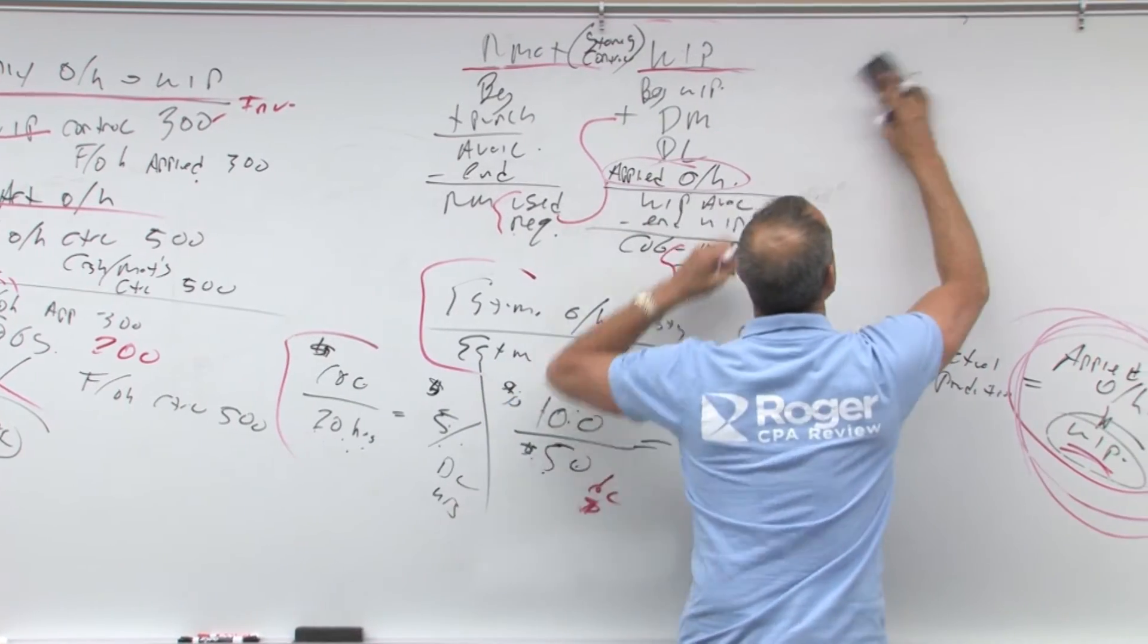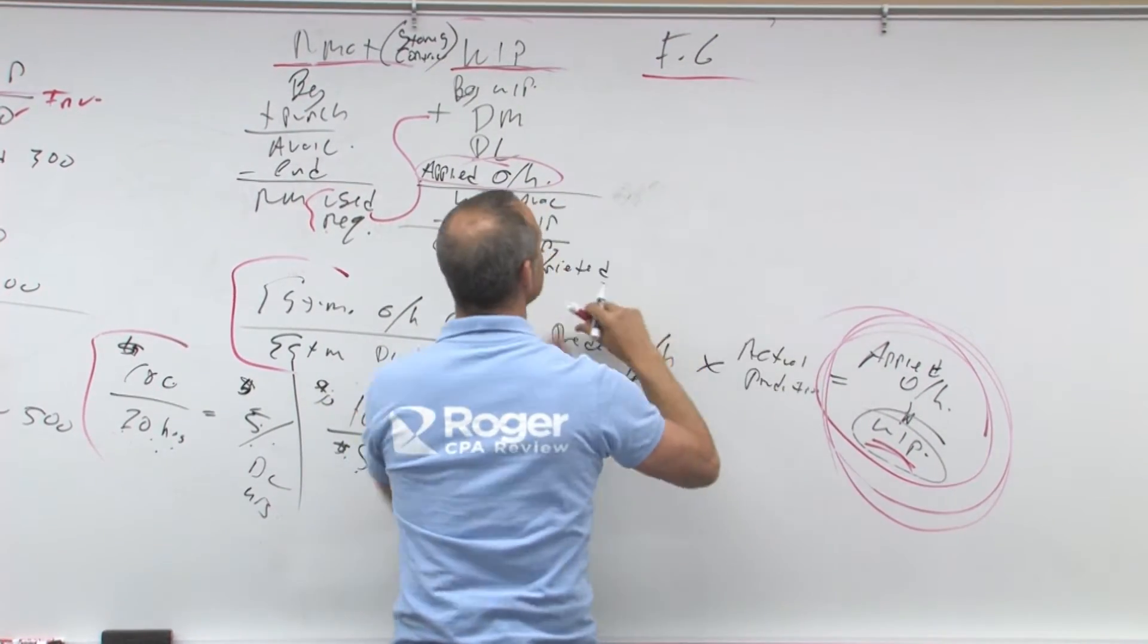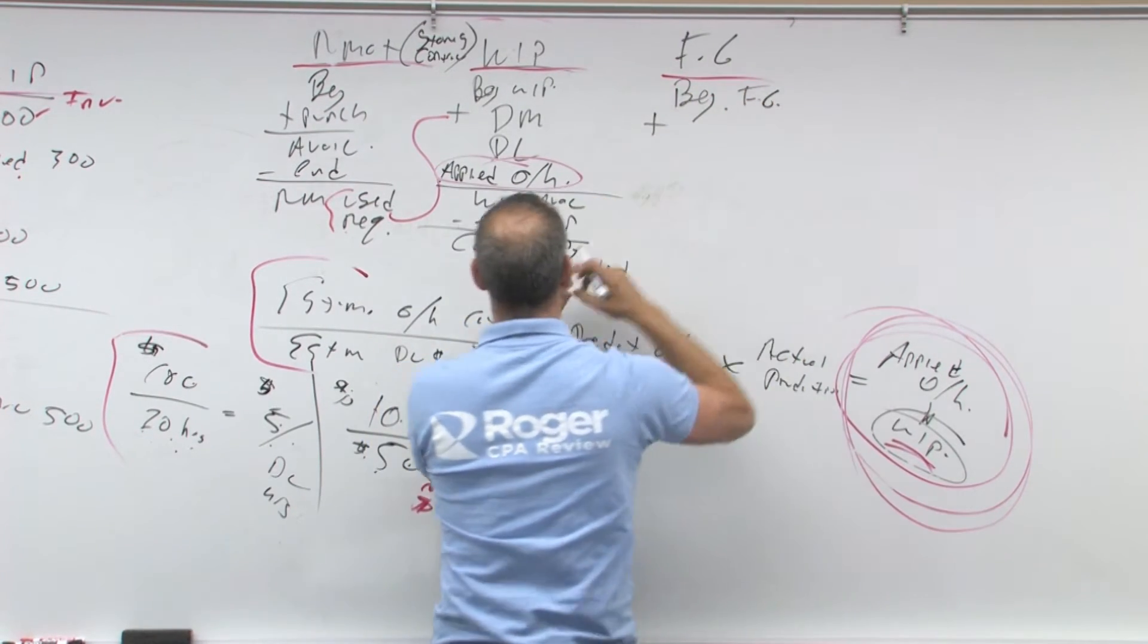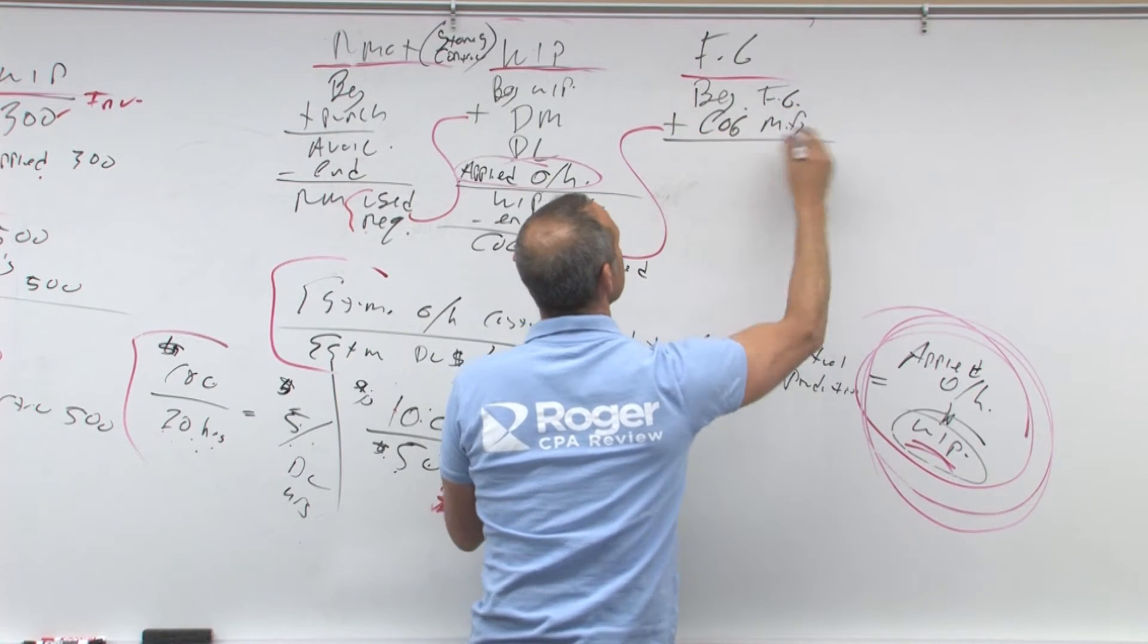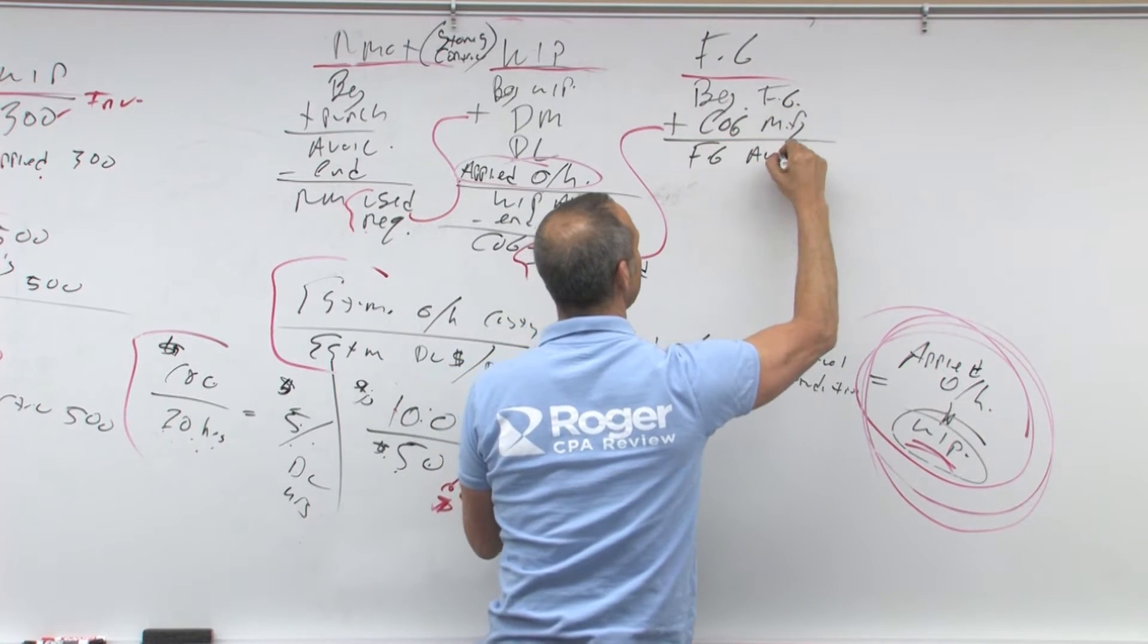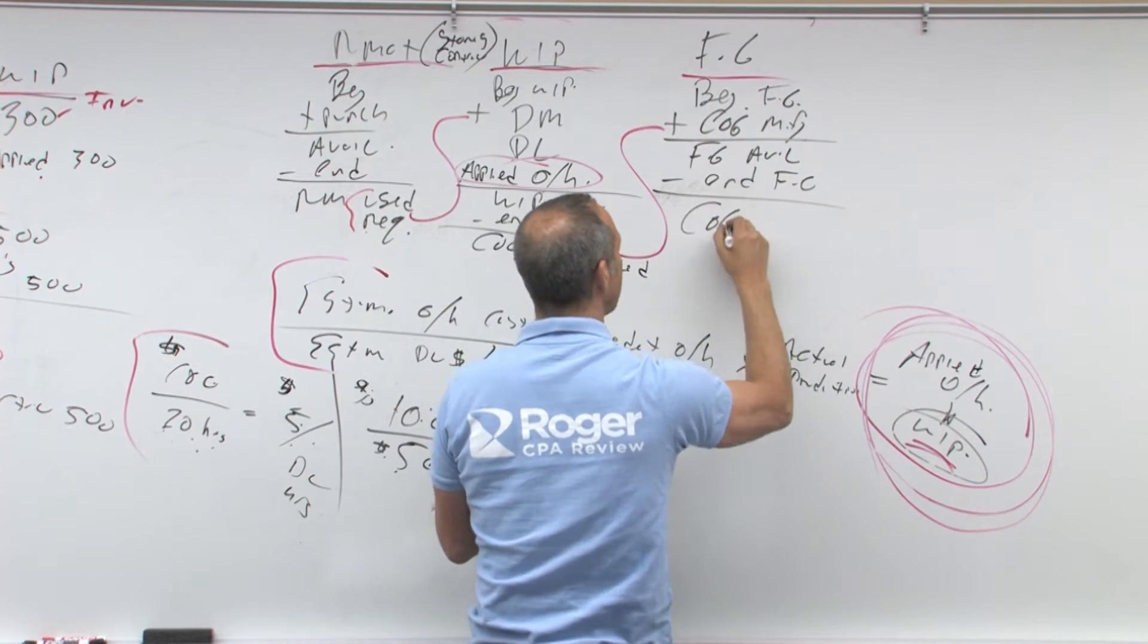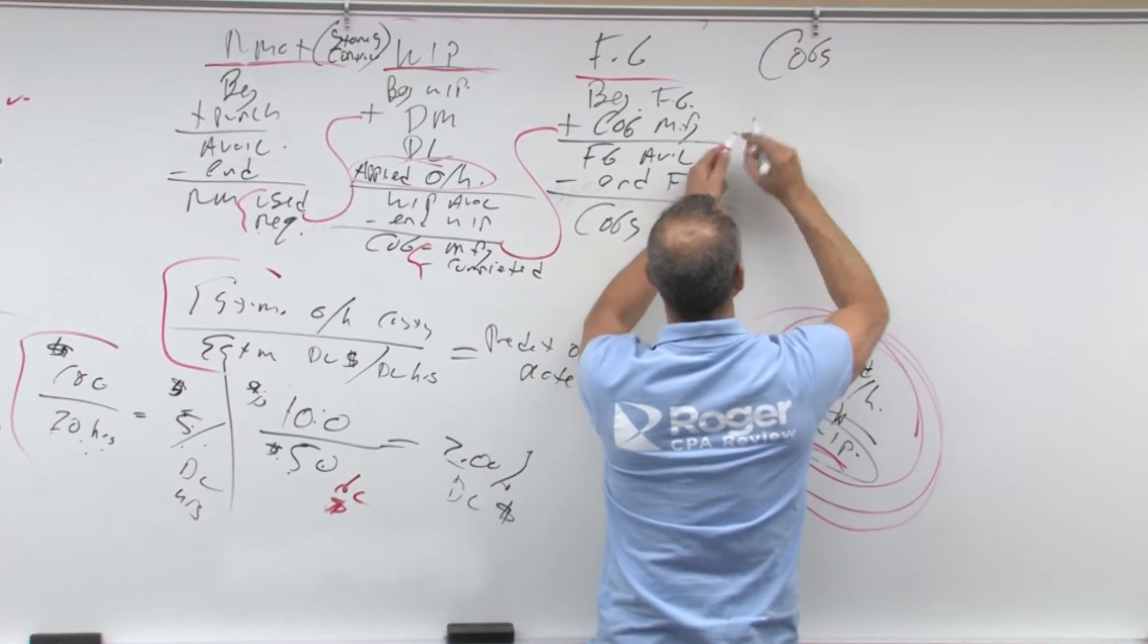So then let's come over, I'll move this over a little bit to finished goods. So with finished goods, we have some beginning finished goods plus cost of goods manufactured or completed equals finished goods available minus ending finished goods equals cost of goods sold. That'll then come over to here, cost of goods sold.